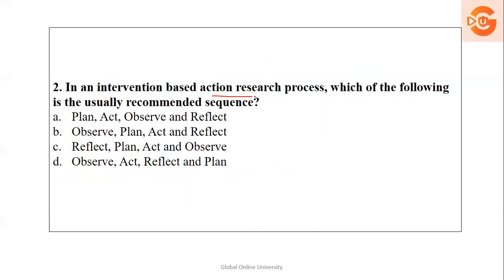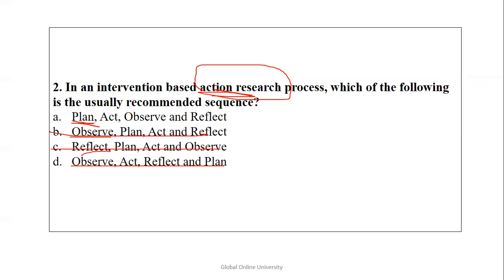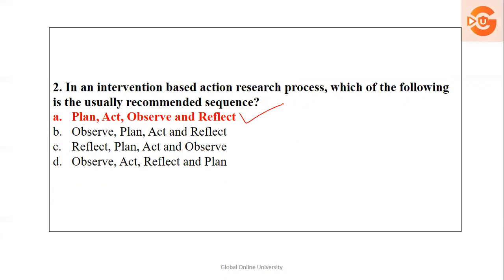In an intervention-based action research, this question was covered in my previous two videos on research aptitude. The question asks which steps are usually recommended. We can't start with observing, reflection, or observe alone. Ideally, these three are not a starting option. We start with planning, then we act, then observe and reflect. So it's very easy, but in a hurry you can mess up the answer. The right answer is option number one: plan, act, observe, reflect.